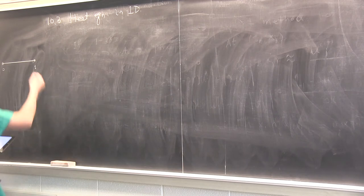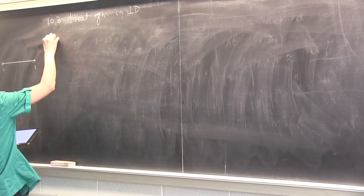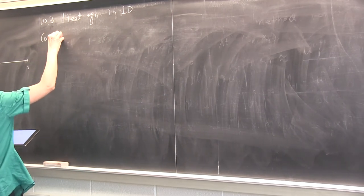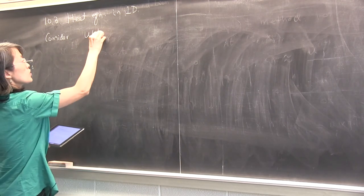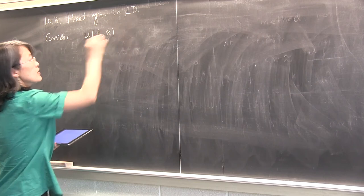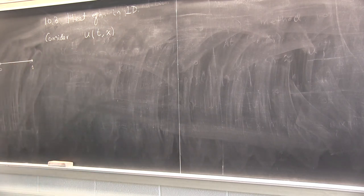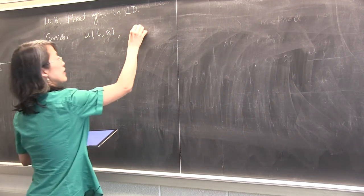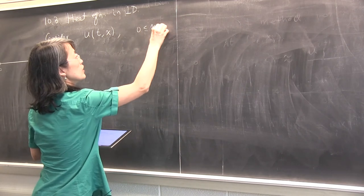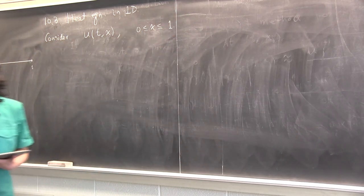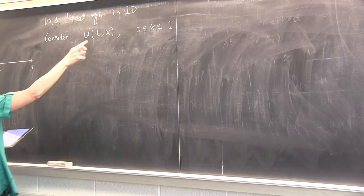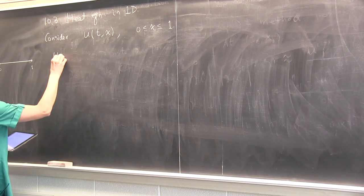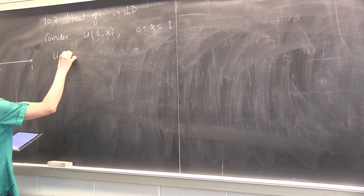You have a heat distribution — so temperature. Let's say U will be the temperature in this rod, and it changes in time, so it's a function of time and a function of space. That's my unknown, and I consider just a unit length. Here's the heat equation: U here satisfies this equation.